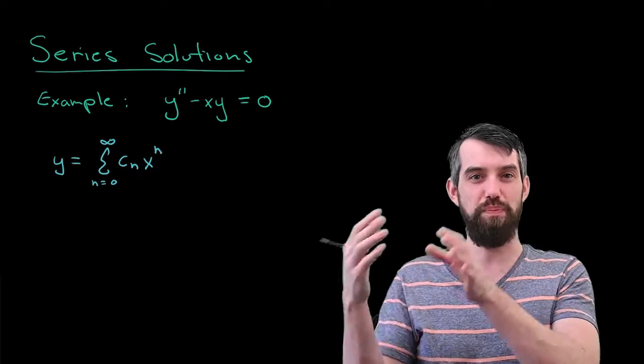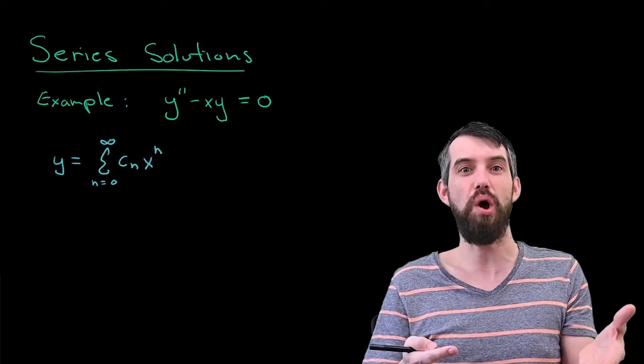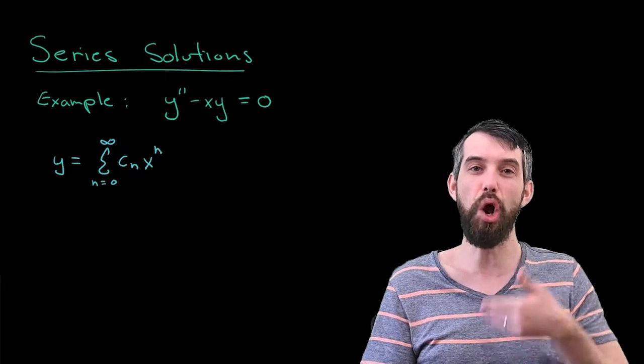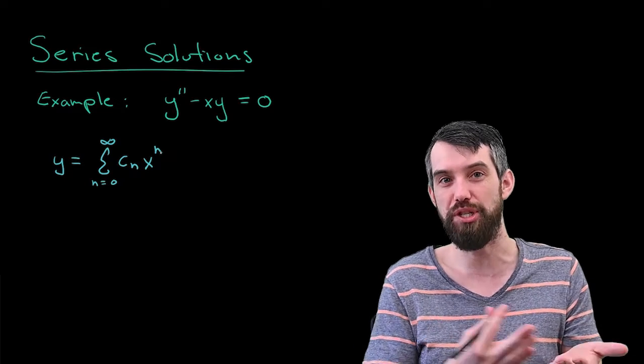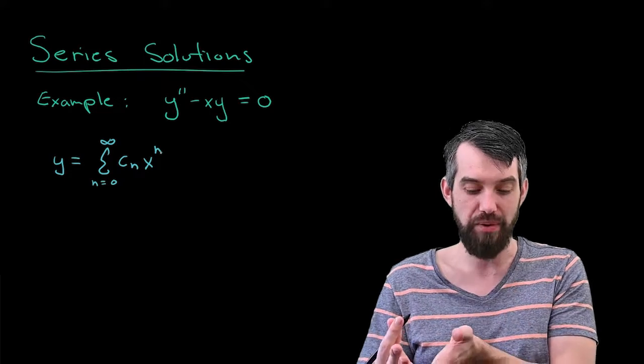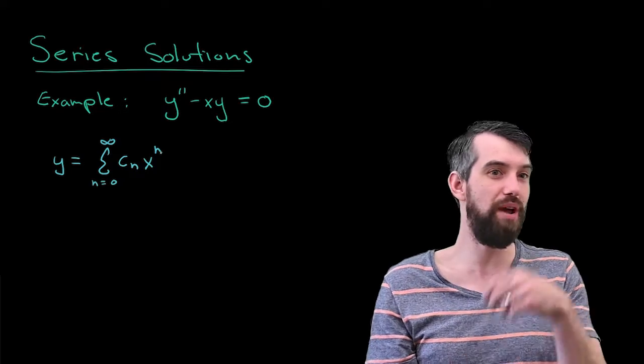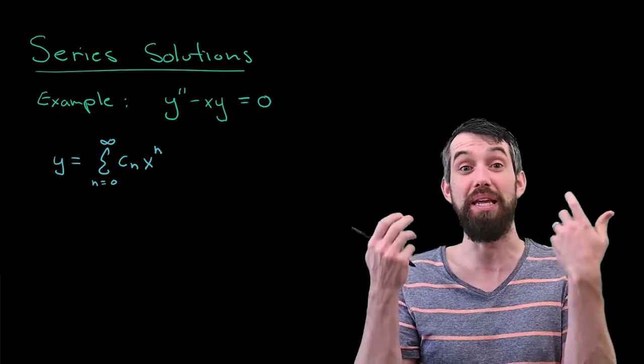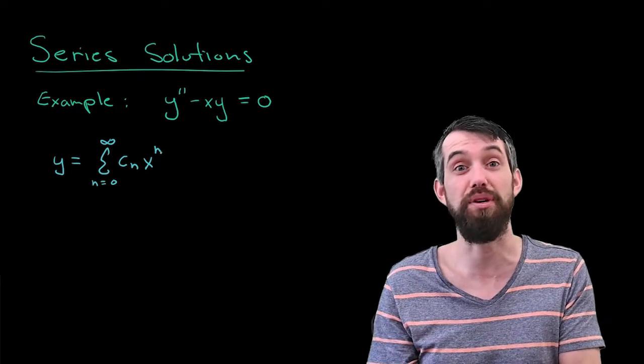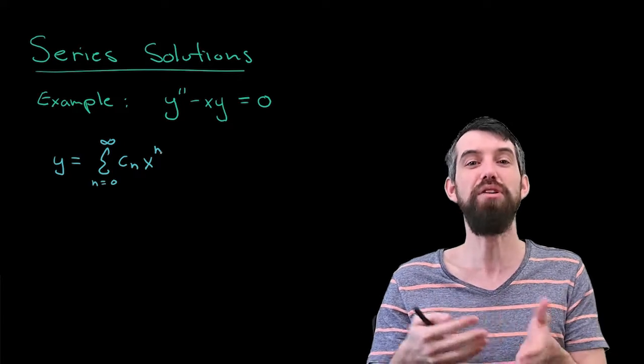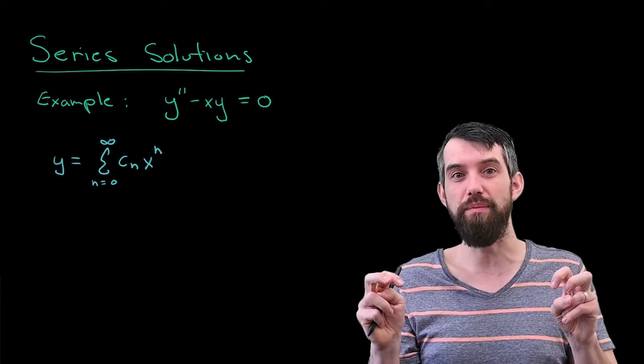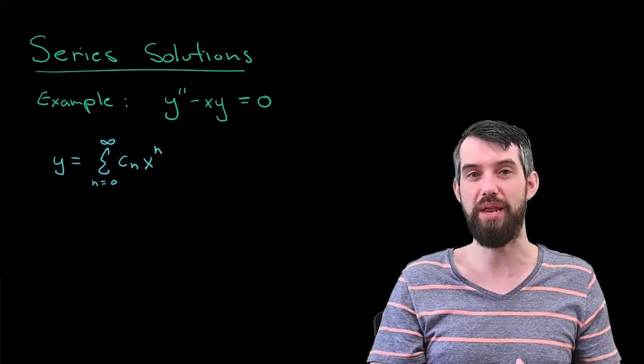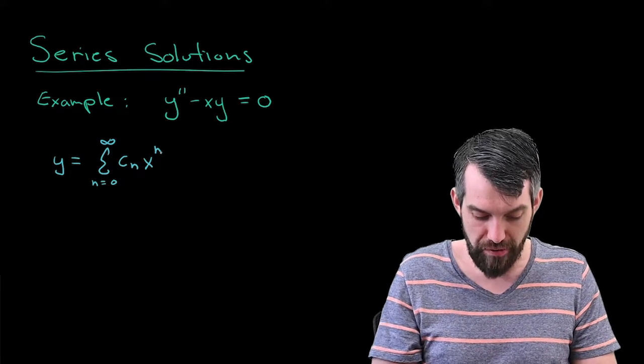I'm going to begin by assuming that I have a series solution. That is, I'm going to assume that y looks like an infinite sum, with an indexing variable of n equal to zero up to infinity, of some coefficient c_n and then powers of n. So this is in fact a power series centered around zero.